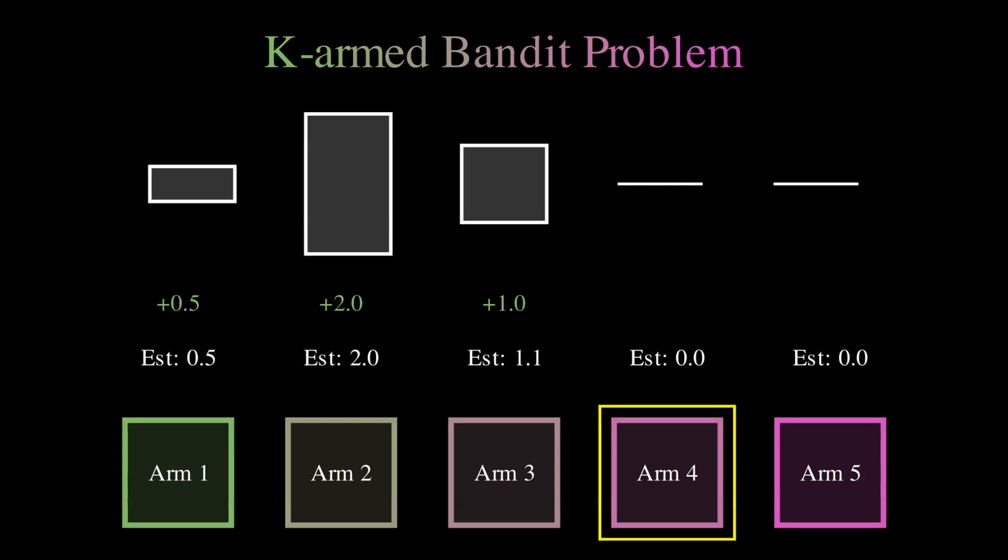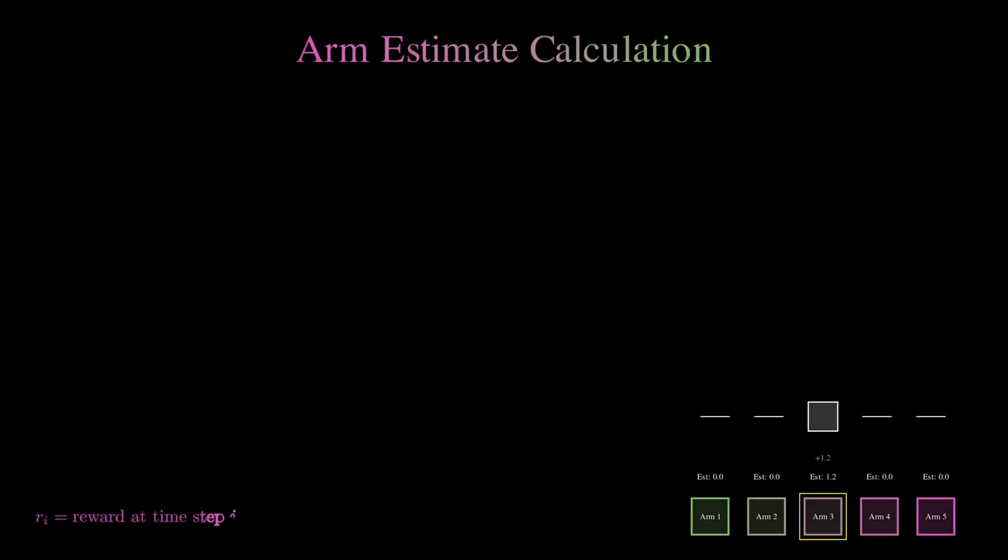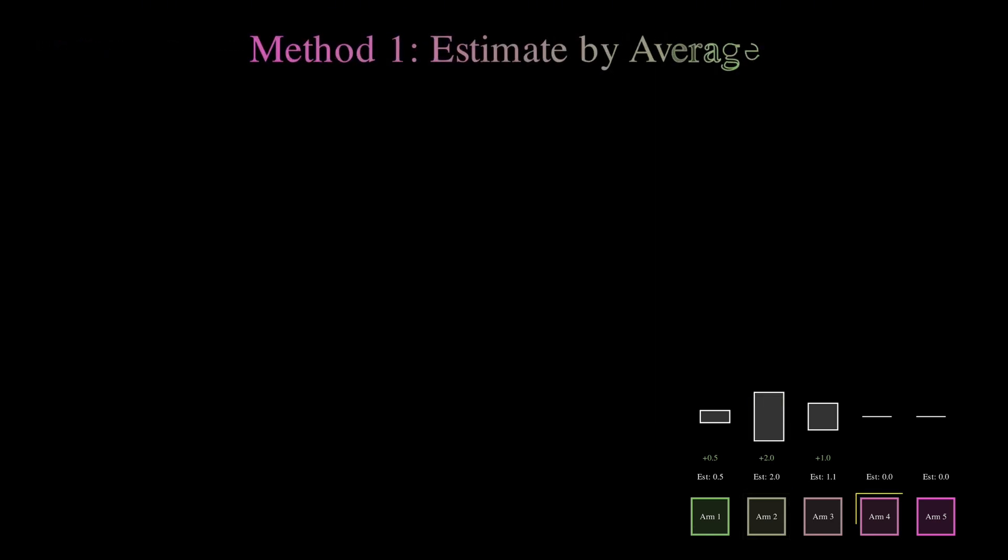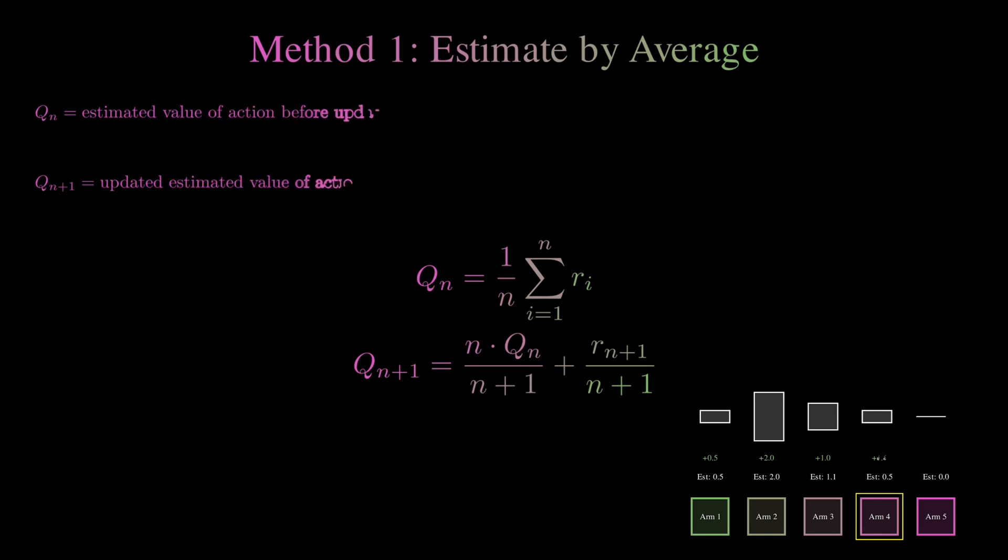I thought it would be interesting to dive a bit deeper into how we actually compute the estimates for each one of the arms. Because as you might remember from earlier animations, every time we pull an arm, we get a reward. But that reward doesn't just sit there. We use it to update how much we think the arm is worth. Now, let's start simple. The more straightforward approach is to just compute the average reward every time. Sounds good, right? So every time we pull an arm, we add the new reward to the previous ones, and then divide by the total number of pulls. So you've got something like R1, R2, R3, all the way through Rn, divided by n. But here's the catch. That method, while simple, can get a bit inefficient, because it means we have to store every single reward we've ever seen. And that's not ideal when we're scaling up.